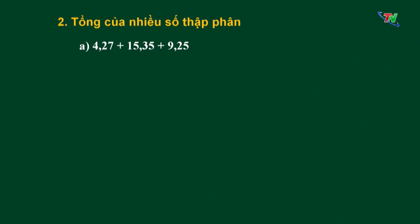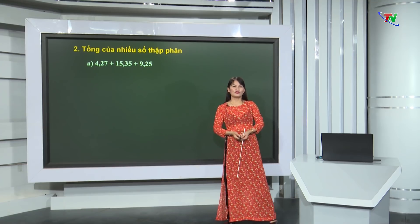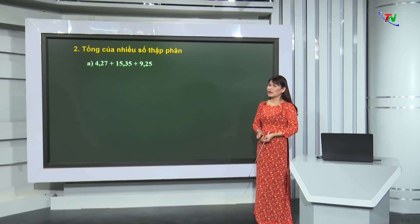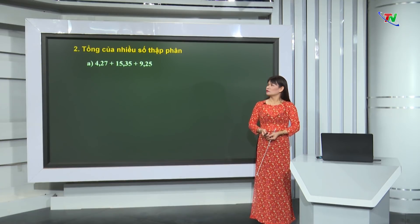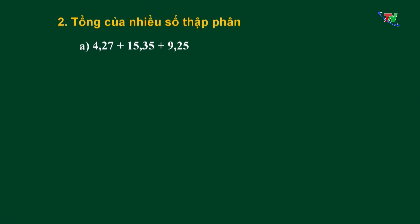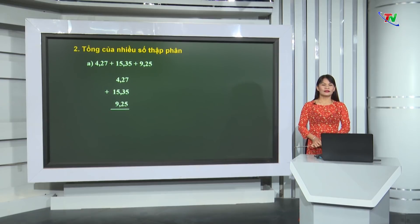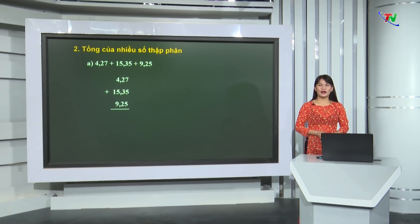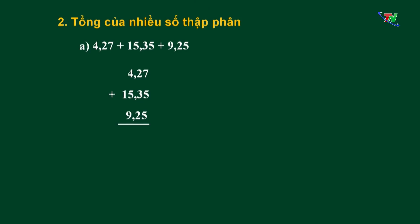Cô có phép tính sau, các em cùng quan sát: 4,27 cộng 15,35 cộng 9,25. Đối với phép tính này, có những bạn có thể thực hiện theo hàng ngang, cộng từ trái sang phải. Bây giờ cô sẽ hướng dẫn các em đặt tính: khi đặt tính thì viết lần lượt các số hạng, các chữ số ở cùng 1 hàng thẳng cột với nhau, và cộng bình thường như cộng 2 số thập phân. Bây giờ chúng ta hãy tự thực hiện phép tính này để tìm ra kết quả. Kết quả là 28,87.